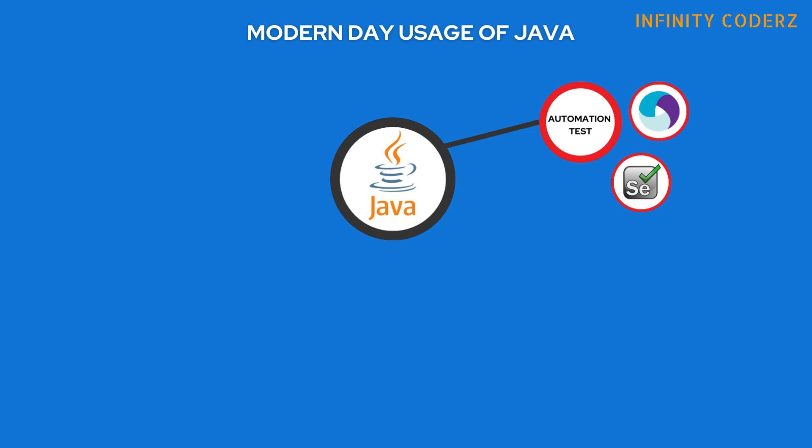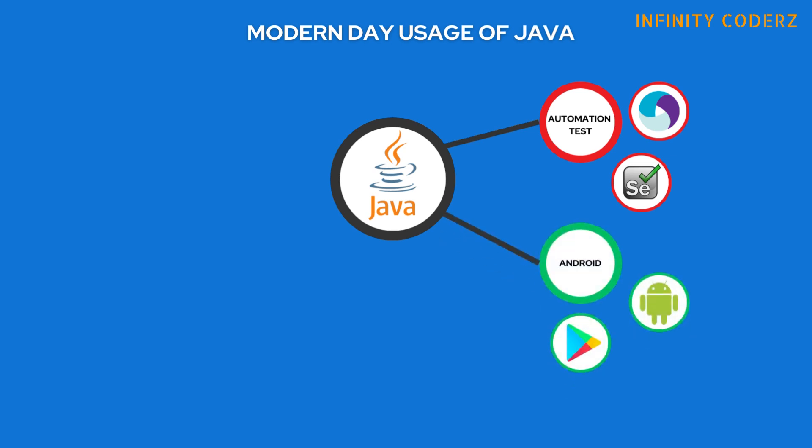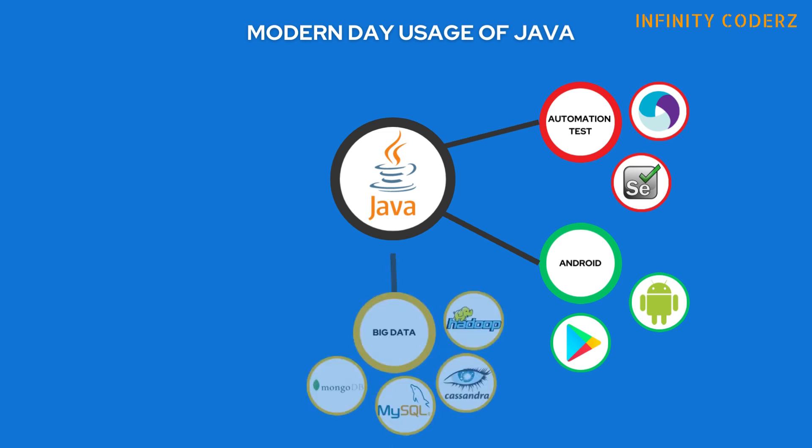Selenium WebDriver, a Java-based API, allows testers to write scripts that simulate user interactions with web applications, facilitating automated testing. Android development: Java has long been the primary language for Android app development. It provides a robust set of APIs and tools through the Android SDK, enabling developers to build feature-rich and scalable mobile applications. Android Studio, the official integrated development environment (IDE), supports Java for Android app development.